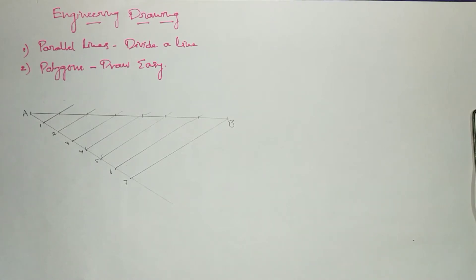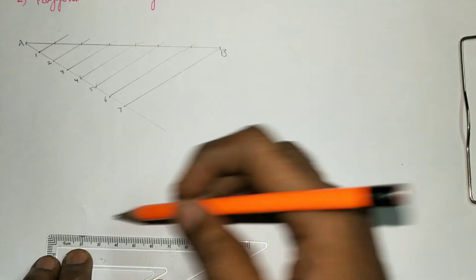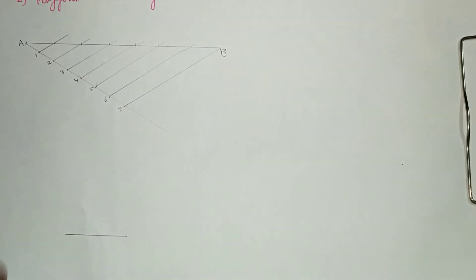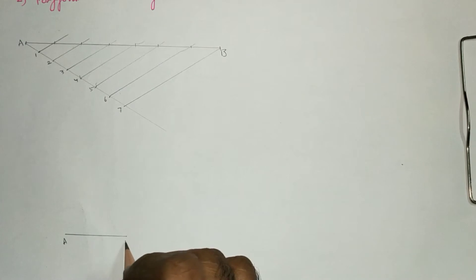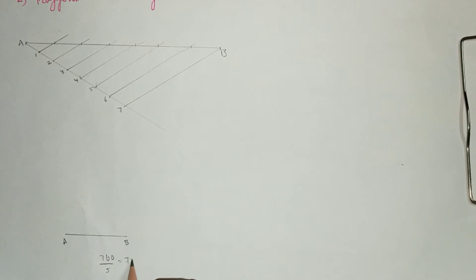First let me explain how to draw a pentagon of a given side length. To construct a pentagon, we use the formula 360 divided by 5, which gives us 72 degrees. So, keeping this protractor, we have to fix an angle of 72 degrees at both ends of the base side.